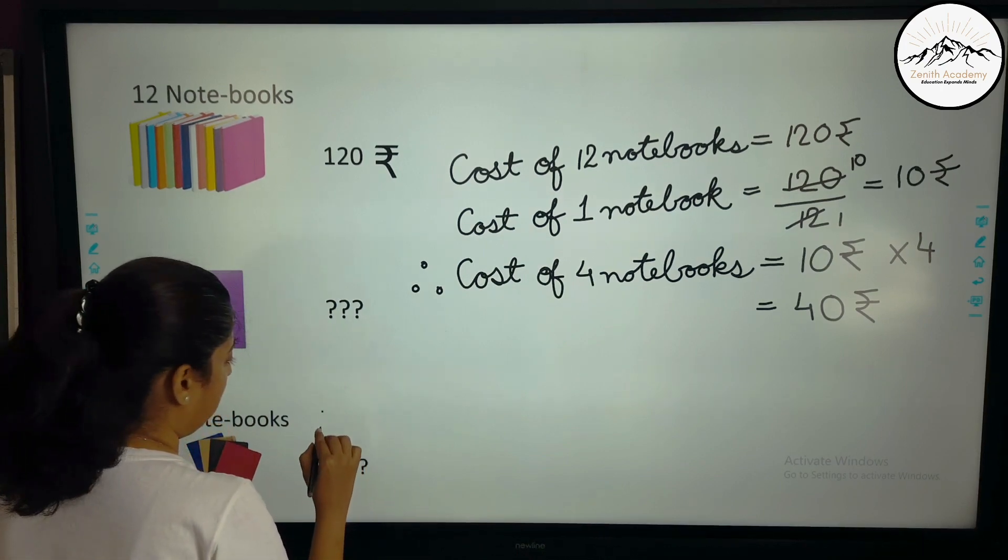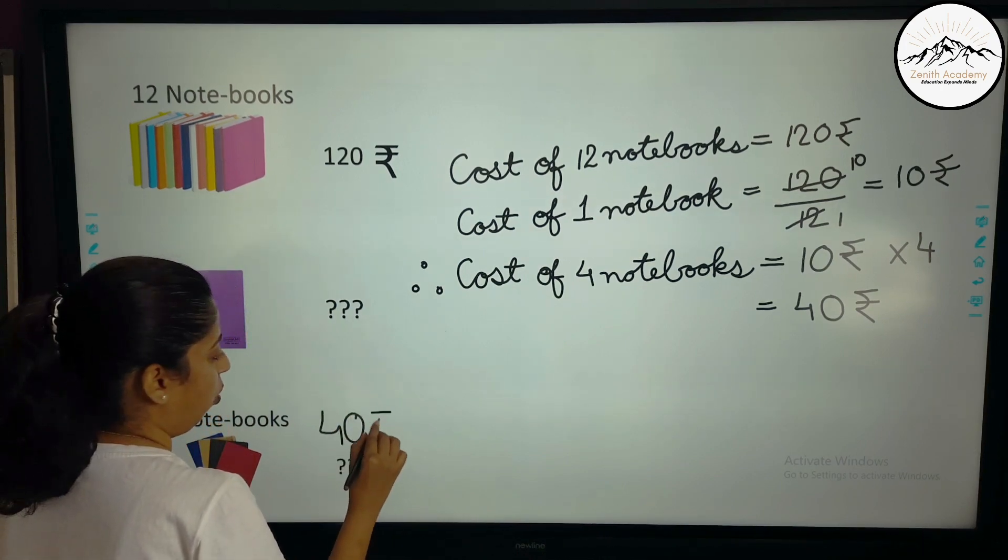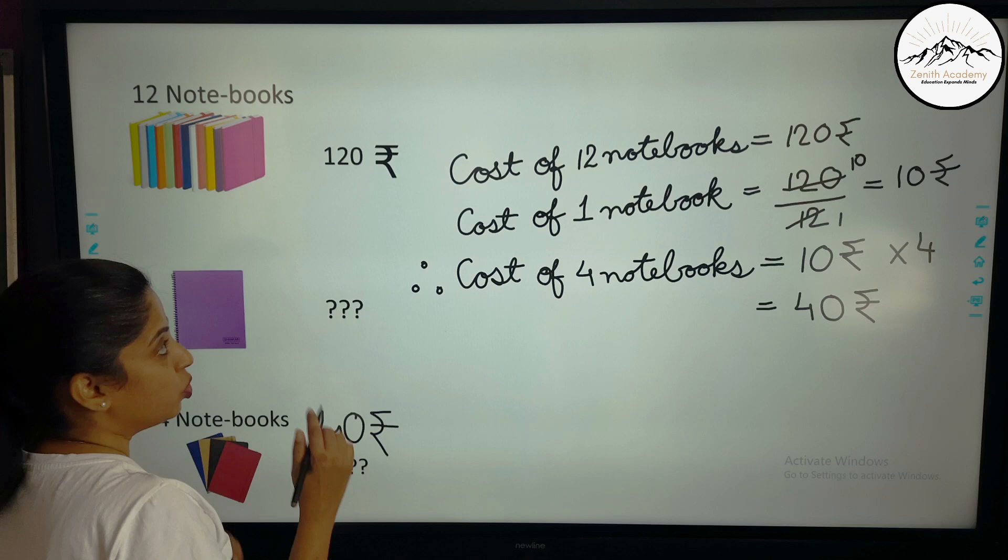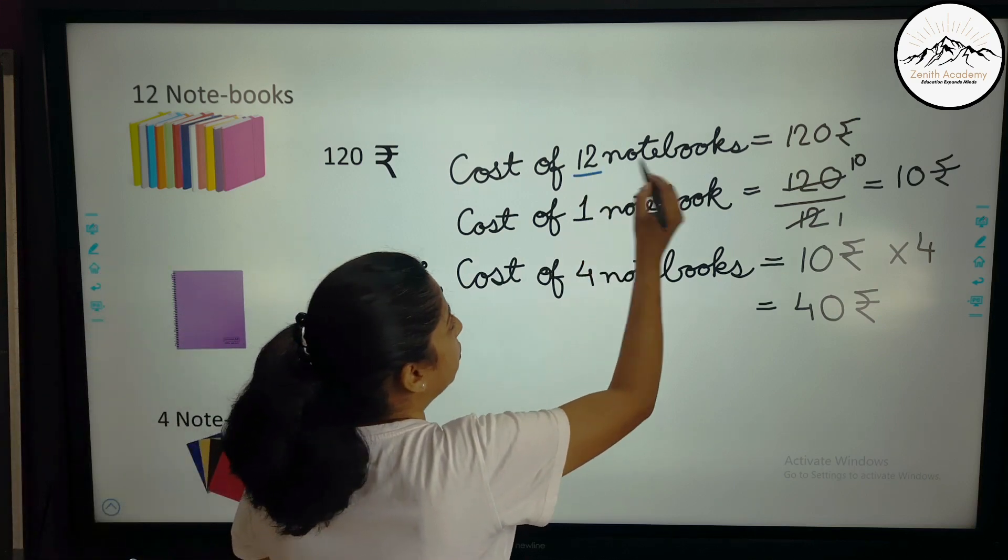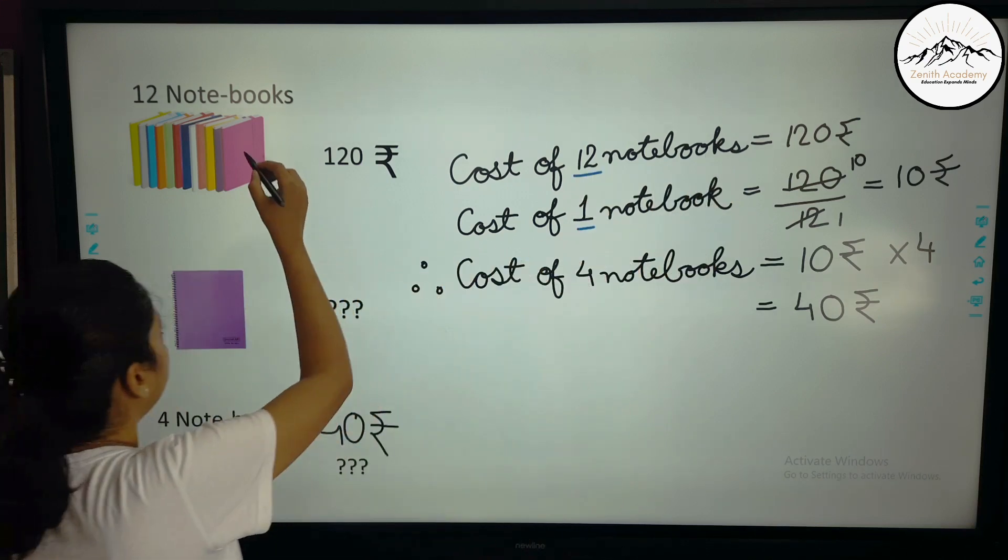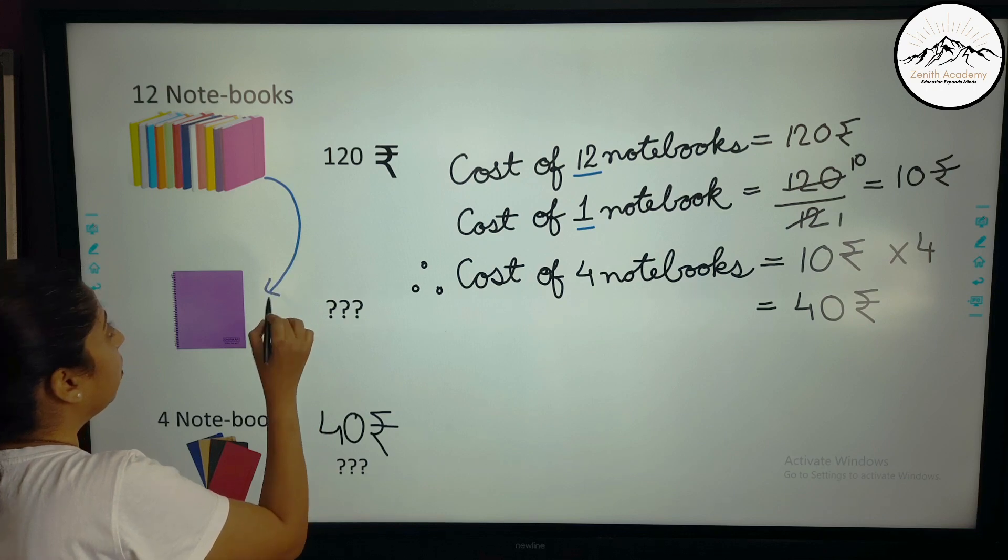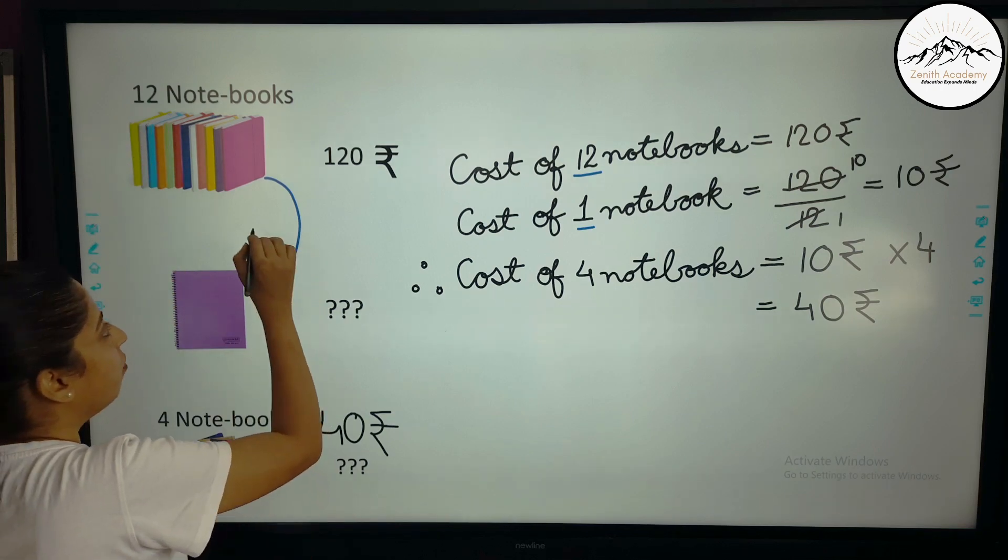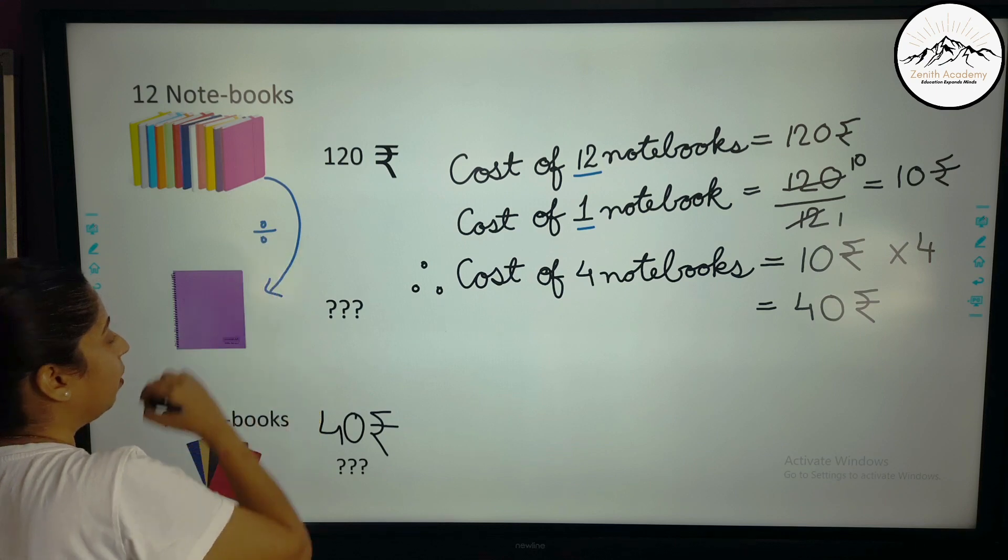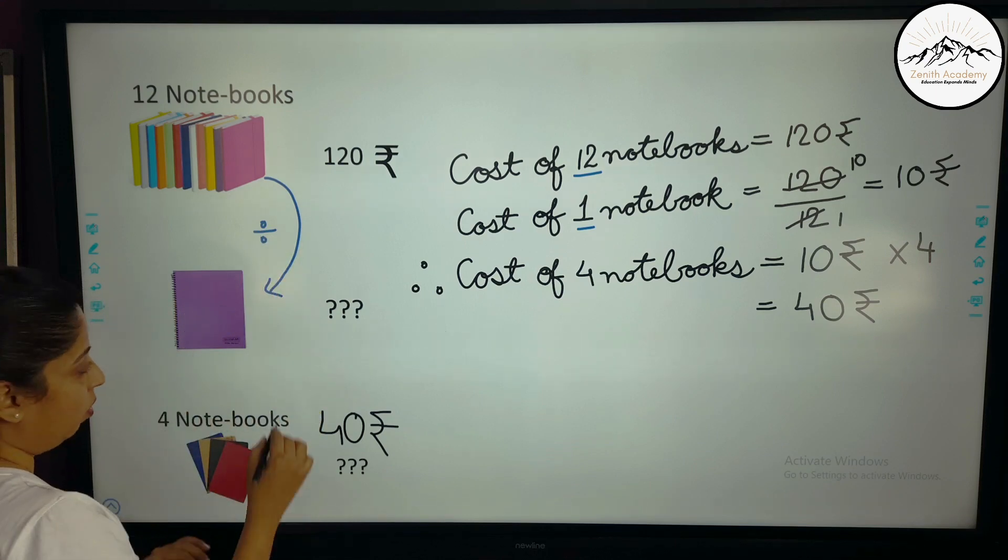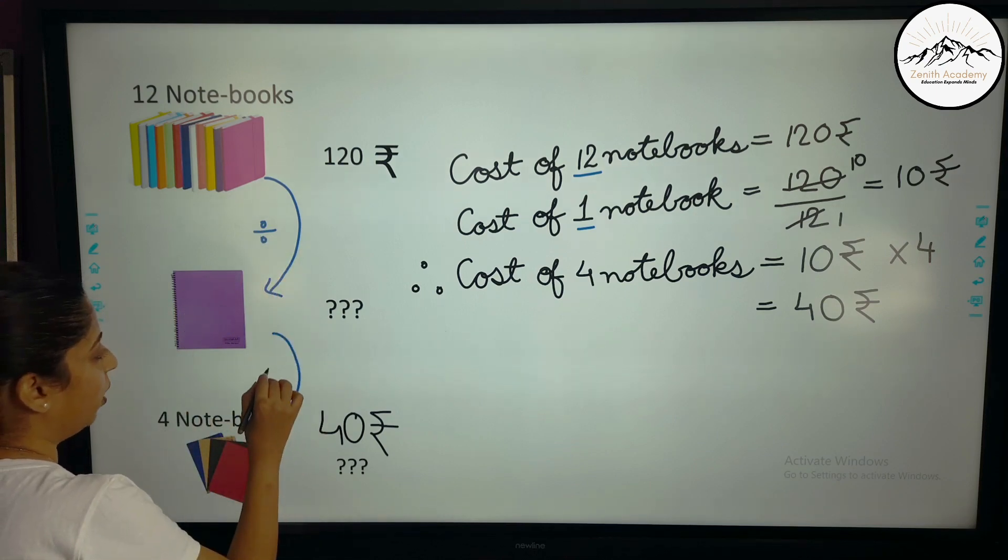So we will have to pay here 40 rupees. So remember, first we went from 12 to 1. From 12 to 1 when we went, we reduced the number of books to 1. So we have to divide.